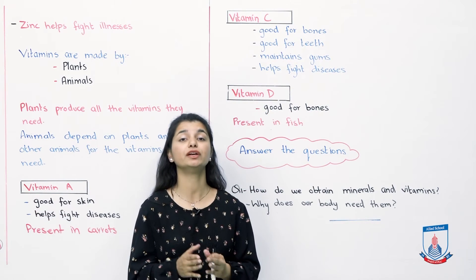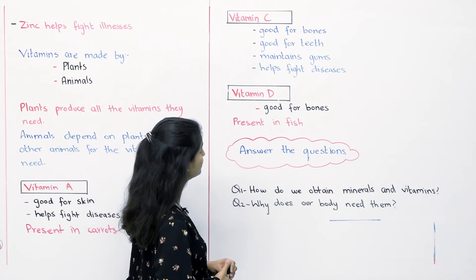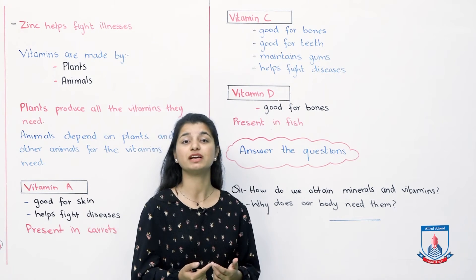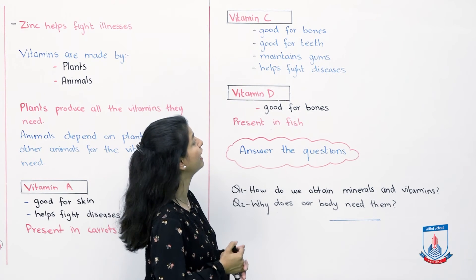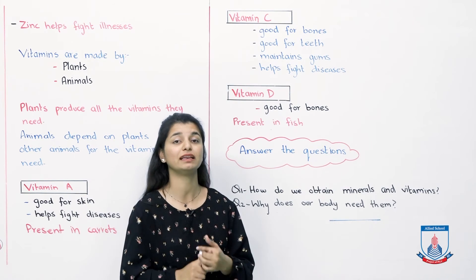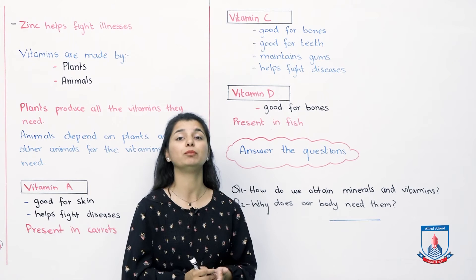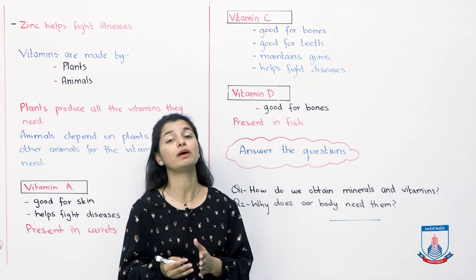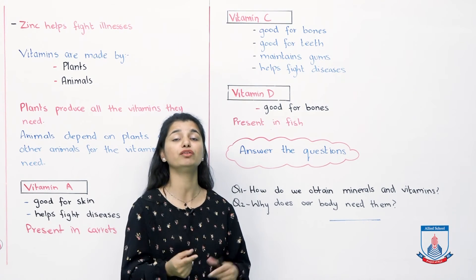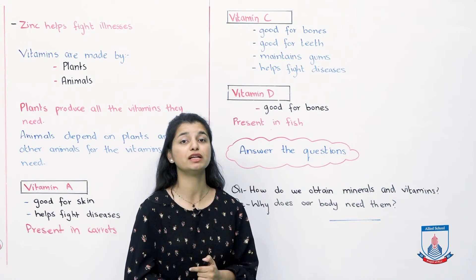Now we will talk about vitamin C, which is another type of vitamin. Vitamin C is good for your bones and teeth, and it also maintains your gums. It helps fight diseases as well — just like calcium supports bones and teeth. You should always try to consume food rich in vitamin C. Oranges, which are rich in citrus, have a very good amount of vitamin C — eating them is good for your gums, teeth, bones, and overall health.